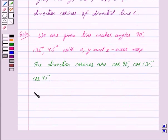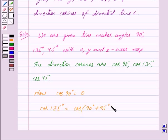Now we get the value of direction cosines. Cos 90 degree is equal to 0, cos 135 degree is equal to cos 90 degree plus 45 degree and this in turn is equal to minus 1 upon root 2. And finally cos 45 degree is equal to 1 upon root 2.